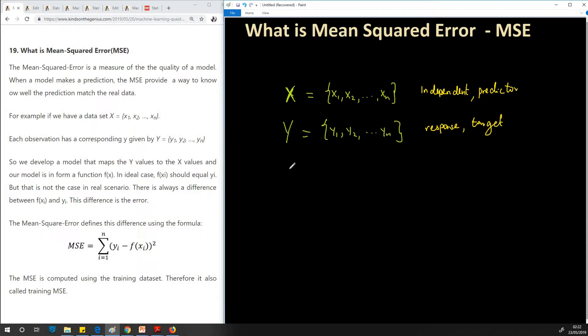Now we want to develop a model that maps x values to y values. A model may be a function of x that takes each of the x and maps it to each of the y. So for x_i it maps to y_i, for x1 maps to y1, for x2 maps to y2 and so on.